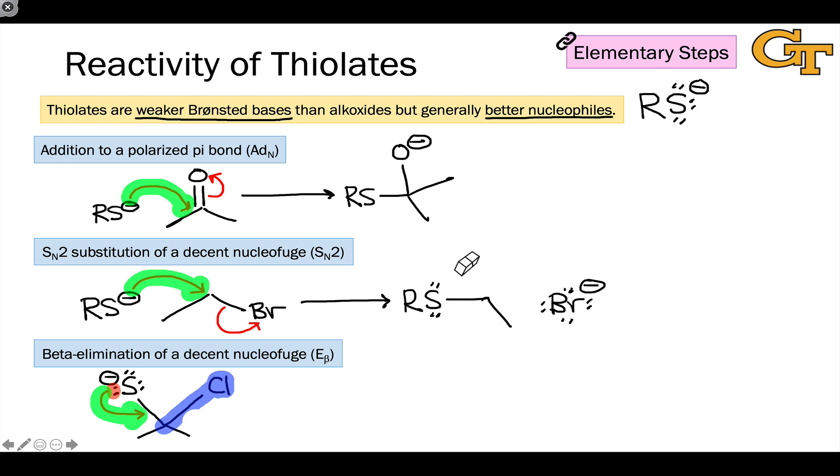Donation of that lone pair on sulfur into a new carbon-sulfur pi bond, along with cleavage of the carbon-chlorine bond toward the more electronegative chlorine, generates the products. The products contain a new carbon-sulfur pi bond, a CS double bond in the product shown here, and the other product is Cl minus, chloride anion.